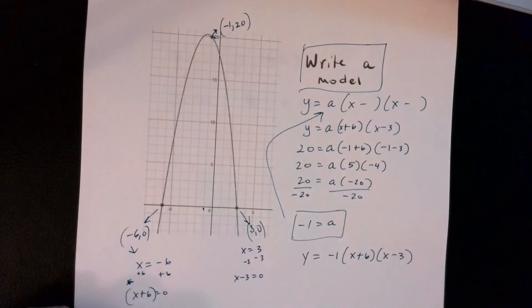The complete function in factored form is y equals negative 1 times (x plus 6) times (x minus 3).